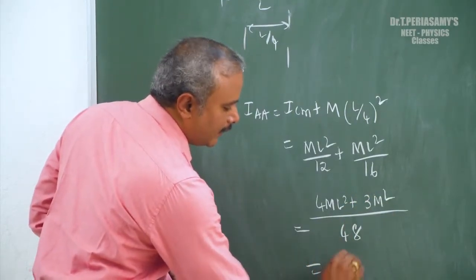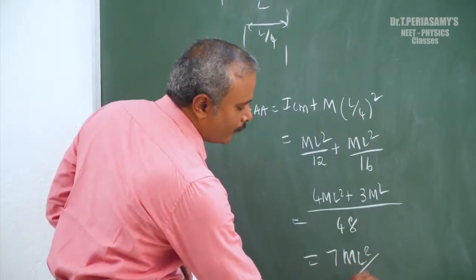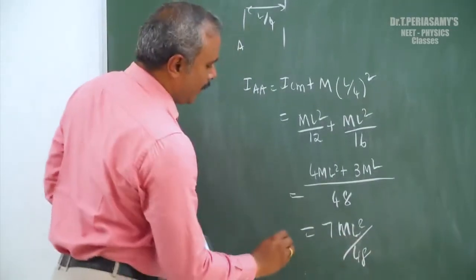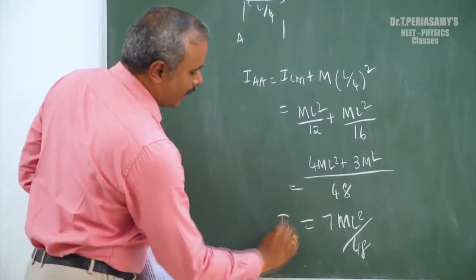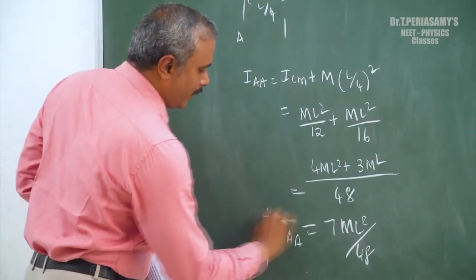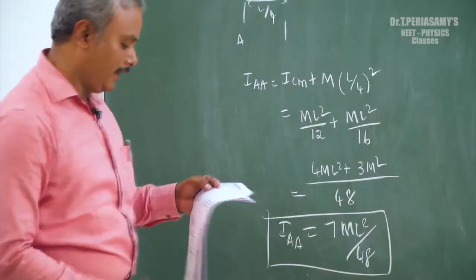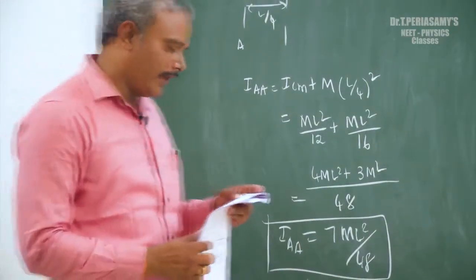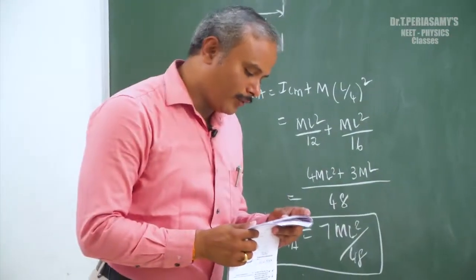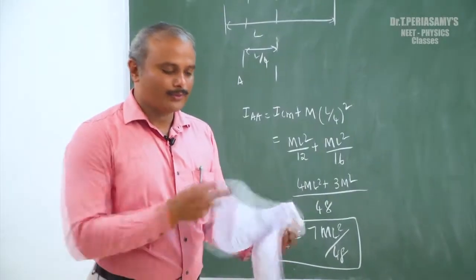The final answer is 7ml squared by 48. So I_AA equals 7ml squared by 48. That is option D.